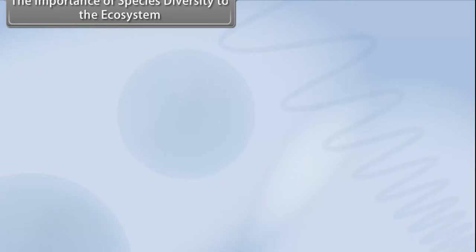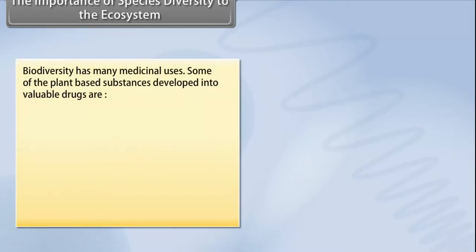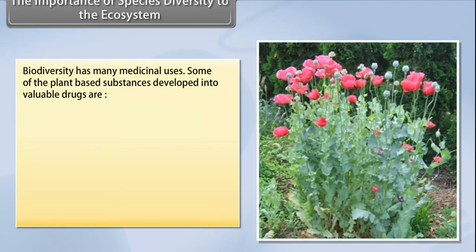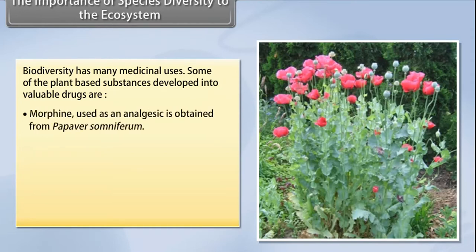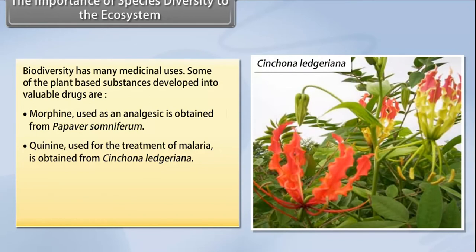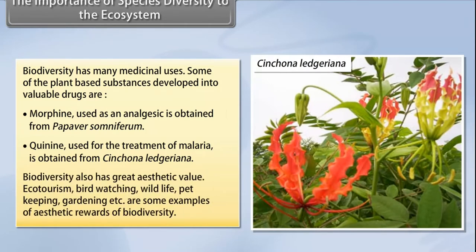Biodiversity has many medicinal uses. Some plant-based substances developed into valuable drugs include morphine, used as an analgesic, obtained from Papaver somniferum, and quinine, used for the treatment of malaria, obtained from Cinchona legeriana. Biodiversity also has great aesthetic value — ecotourism, bird watching, wildlife, pet keeping, and gardening are some examples of aesthetic rewards of biodiversity.